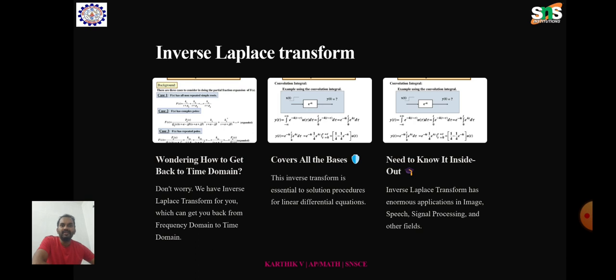It is denoted by L inverse and mathematically defined as f of t equals L inverse of F of s, which equals 1 divided by 2 pi i times the integral of e to the power st times F of s ds.